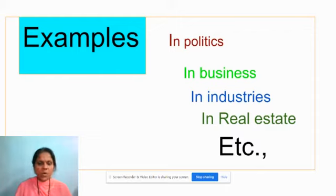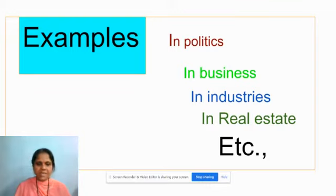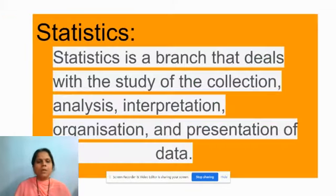Let us study one example in detail — the toy industry. We know that toy industries manufacture toys and release them into the market. But how many? The answer lies in data collection. These industries get data related to the number of children in a country, and depending upon this data, they manufacture toys, release them into the market, and get profit. And this was possible by math.